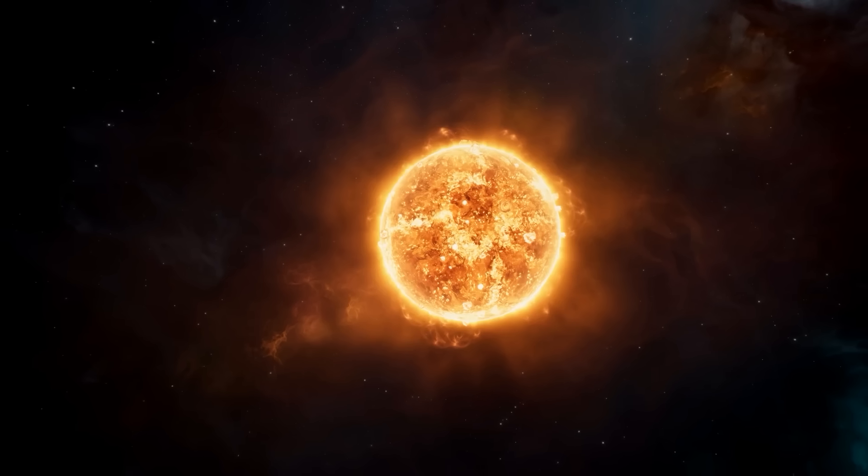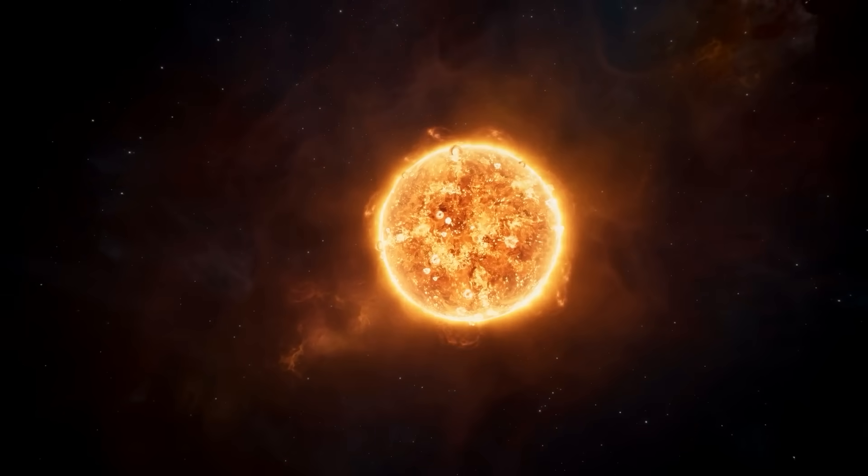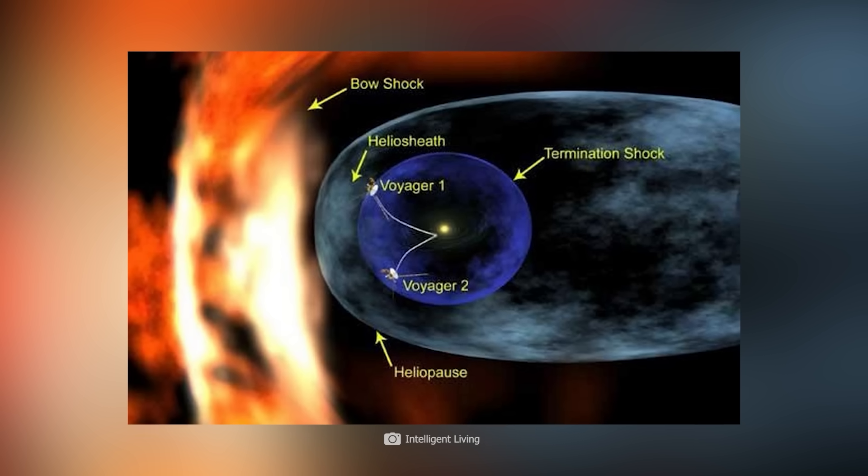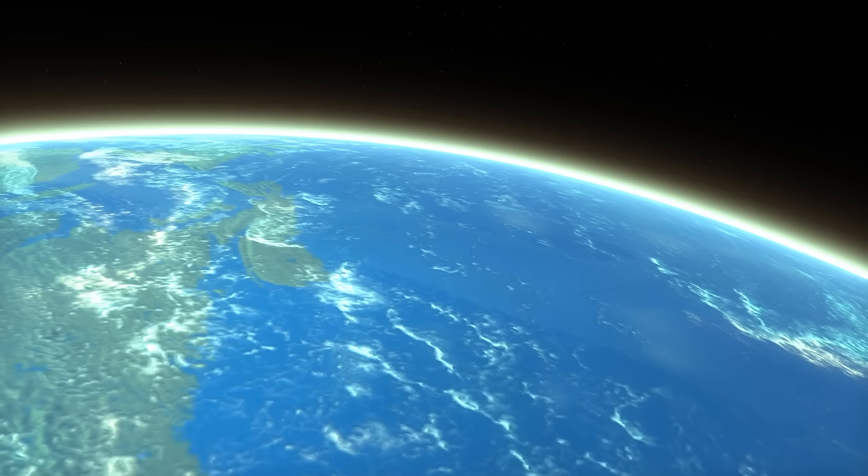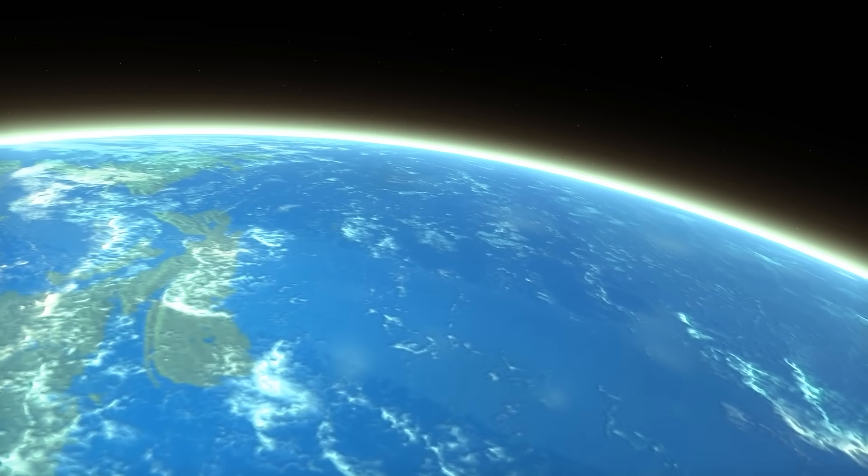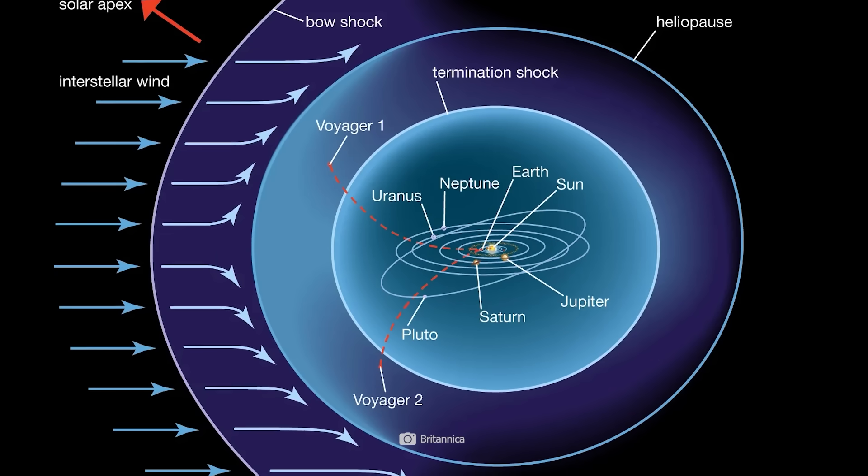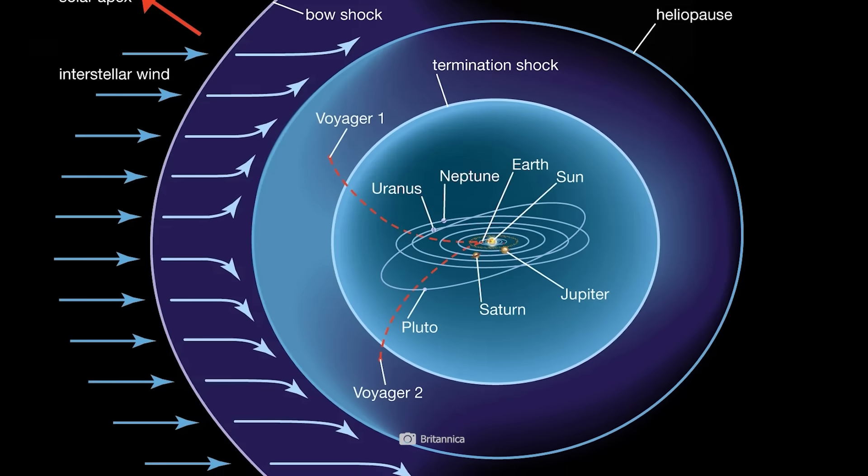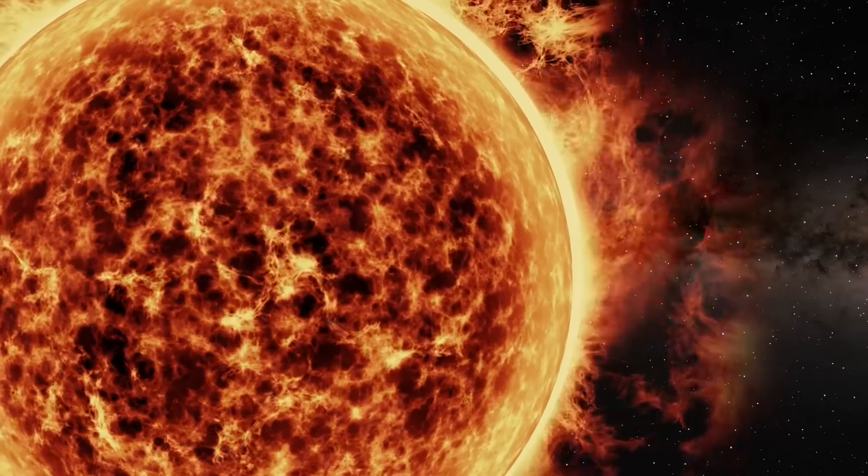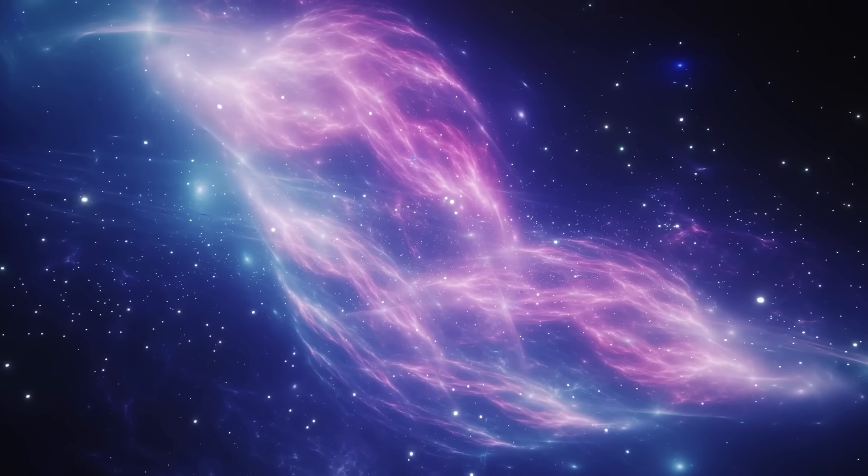Basically, the sun ejects a continuous stream of charged particles into space in the form of solar wind. This creates the aforementioned heliosphere, which is a kind of colossal protective bubble that extends far beyond the planetary orbits and shields us from dangerous cosmic radiation. The outermost boundary of the heliosphere is the heliopause. By definition, interstellar space begins where the solar wind is so weakened that it can no longer overcome the pressure of the interstellar medium. This is the diffused gas, dust, and plasma that fills the space between the stars.